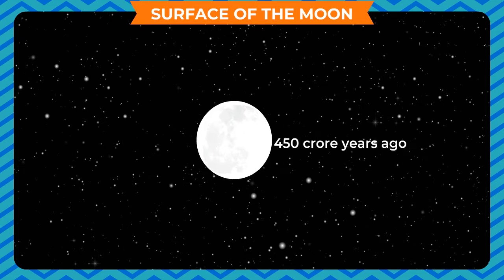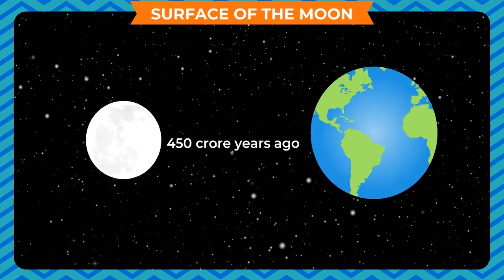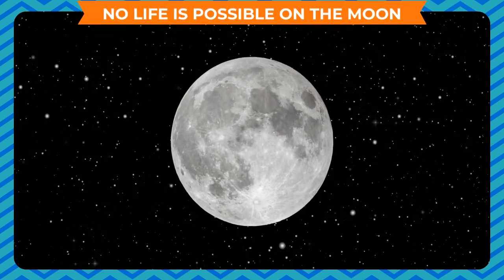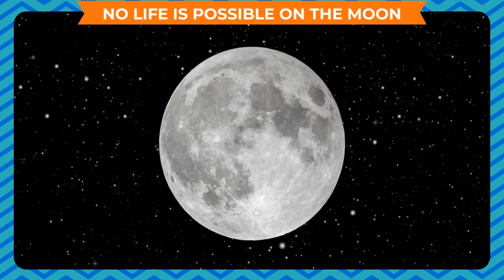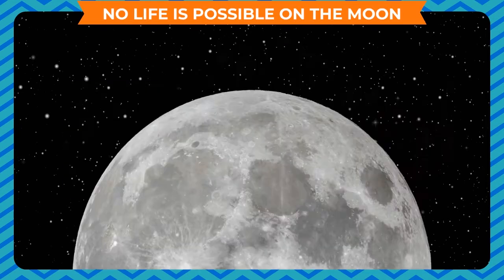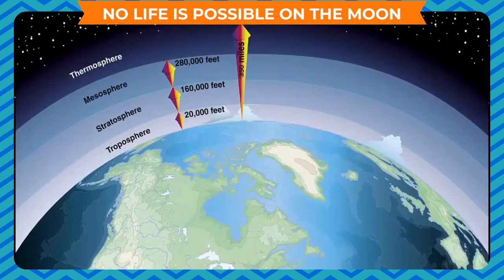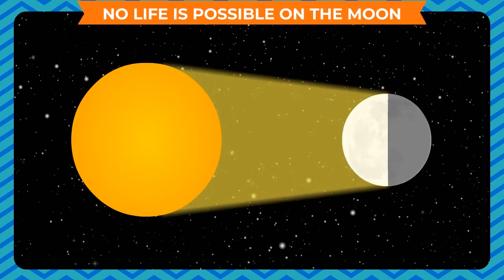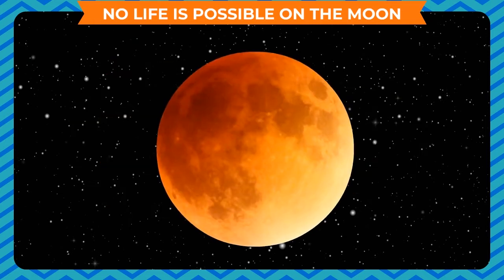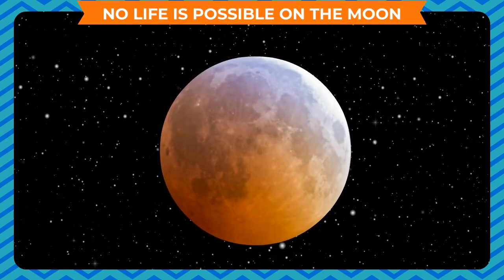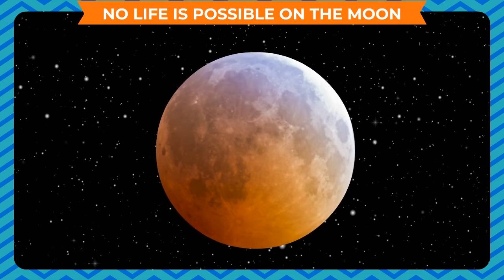Scientists report that the moon is about 450 crore years old, the same as the age of our earth and the rest of the solar system. No life is possible on the moon since it has no air and water. It does not have an atmosphere surrounding it like the earth, so it has no protection from the sun's strong rays.